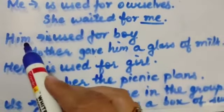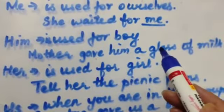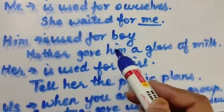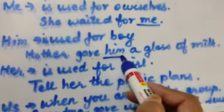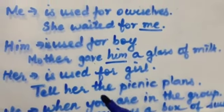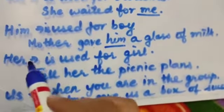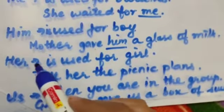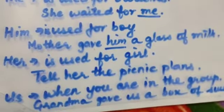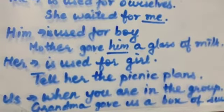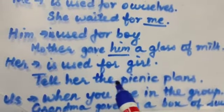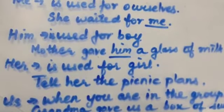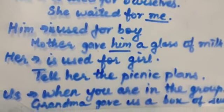Next is him. Him is used for a boy. For example: mother gave him a glass of milk. So him refers to a boy. Now her — her is used for a girl. Whenever we say her, we are talking about a girl. For example: tell her the picnic plans. So here we are talking about a girl.